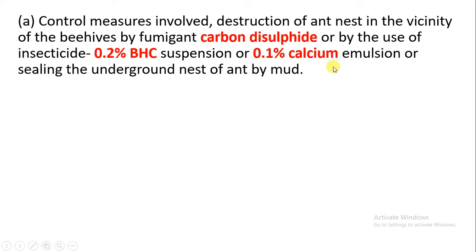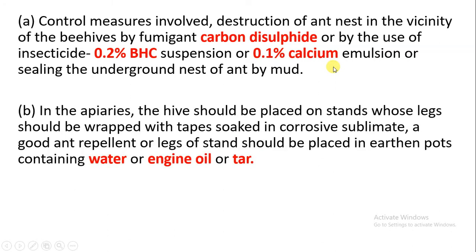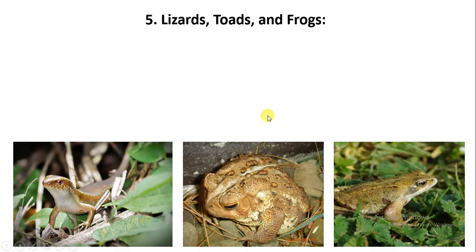To protect the beehive from ants, we can use fumigants such as carbon disulfide, 0.2% BHC, or 0.1% calcium emulsion. Sealing the ant nests near the beehive location is also effective. We can also use water, engine oil, and tar at the stand of the beehive — dipping the stand legs in water, engine oil, or tar — to prevent ants from reaching the hive.